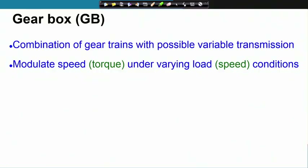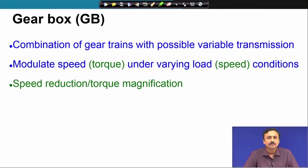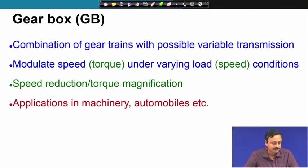And when we go to cruise speed, our torque requirement is low, but we require a very high transmission — high motion transmission. So this gear box allows us to make this variation. When we have speed reduction, we have a torque magnification. These are applied in machinery, automobiles, etcetera.